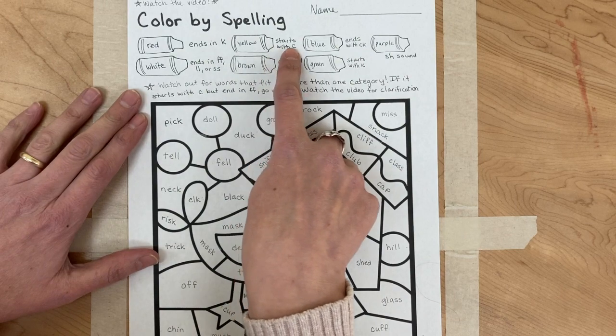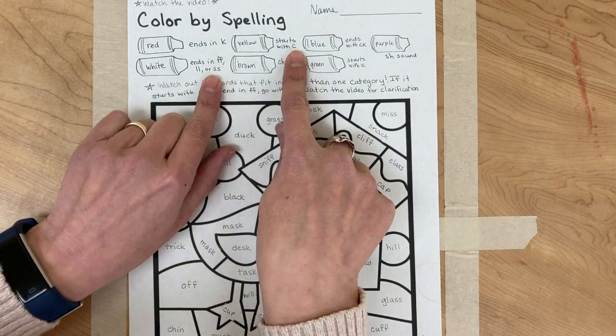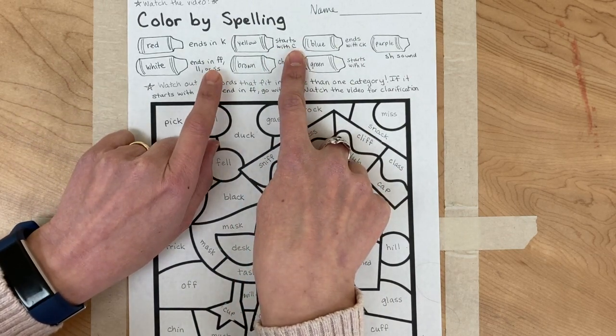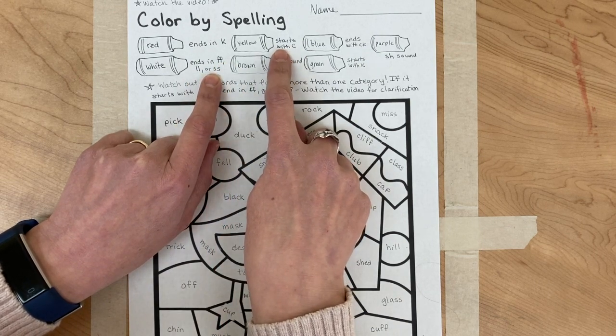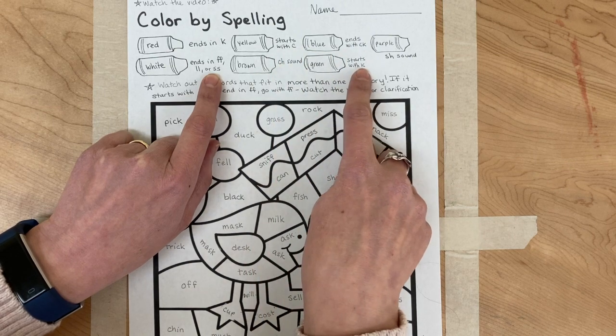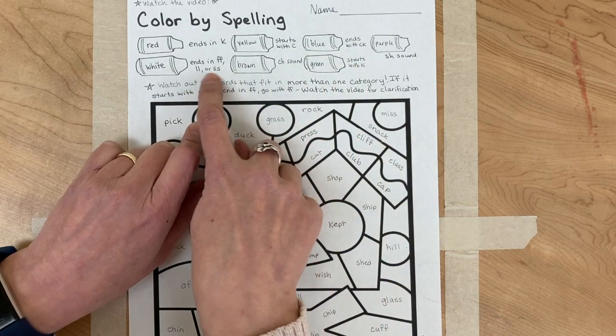We also have words that start with C, but some of those words might also end in double F, double L, or double S. If you have a word that starts with C or starts with K but it ends in one of these, this is the one I'm looking for.